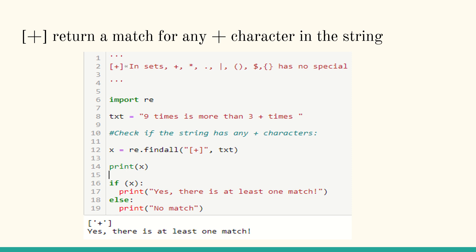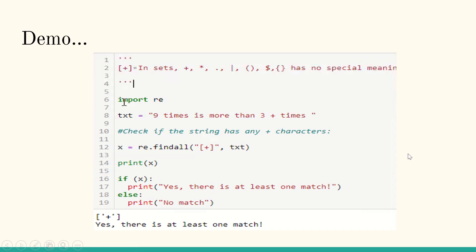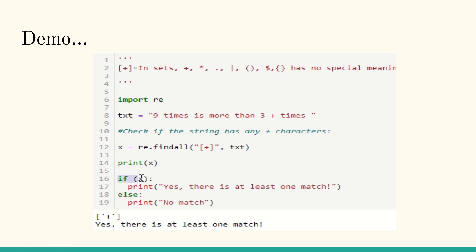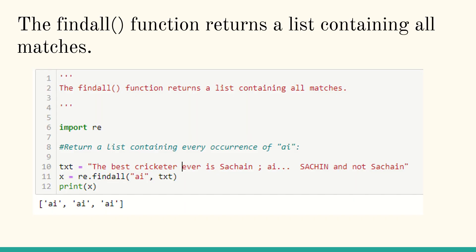The aim for this question is: how will you find out if there is a plus character in the string? I have imported re, and the text reads 'nine times is more than three plus times.' I need to find out if plus is available, so I use findall. In the square bracket I put a plus, close the square bracket in double quotes, and text is the argument. If x is true, we get 'one match'; else 'no match.' In this case it is true, so we get plus as the output.